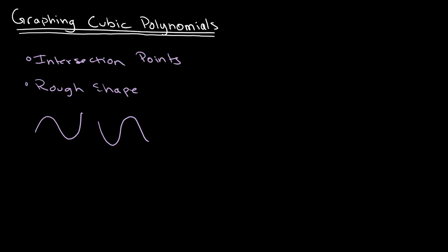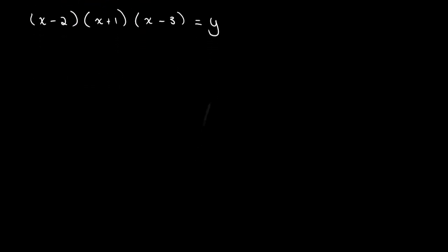Let's look at an example. It's already been factorized, which makes it much more simple. We have (x minus 2) multiplied by (x plus 1) times (x minus 3) equals y, and we need to sketch the graph for this.